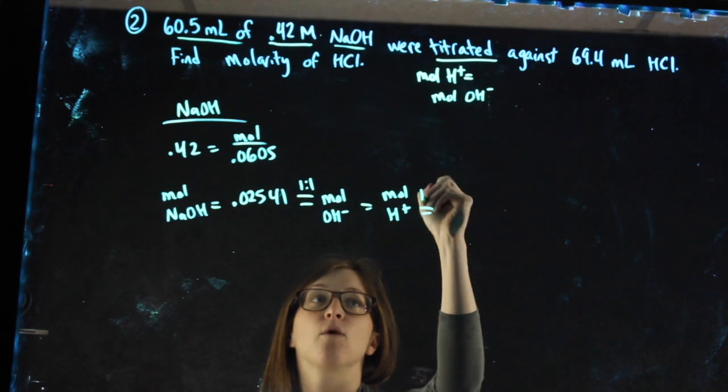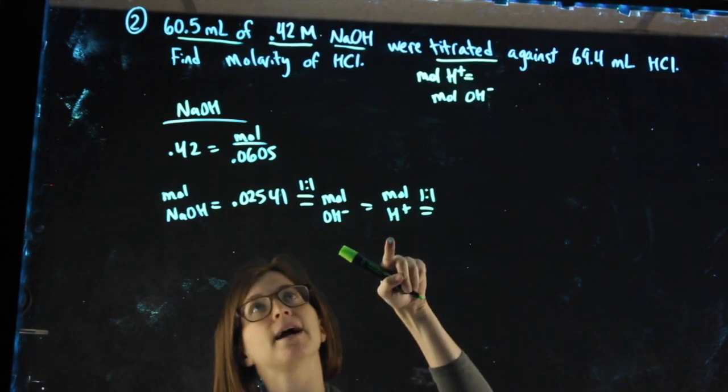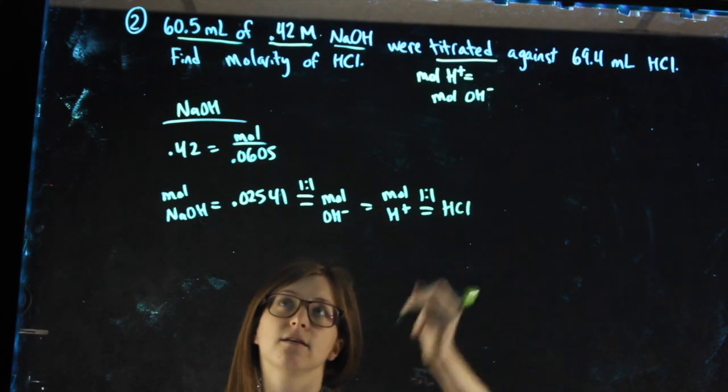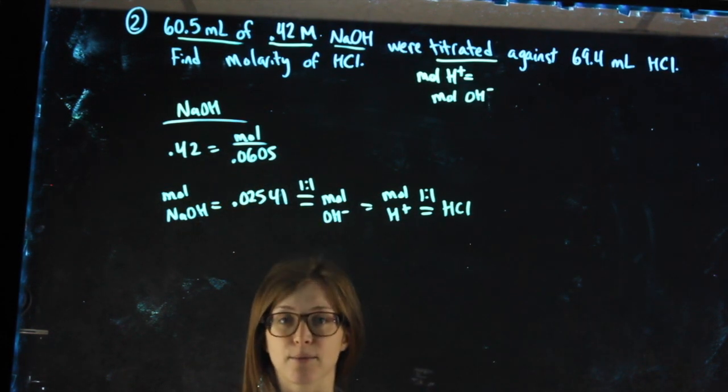But then I can use another one-to-one ratio because my hydrogen is in a one-to-one ratio with my HCl. So without doing too much work, I already have my moles of HCl.